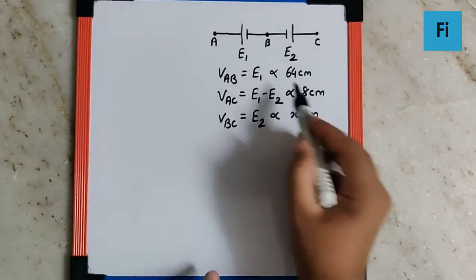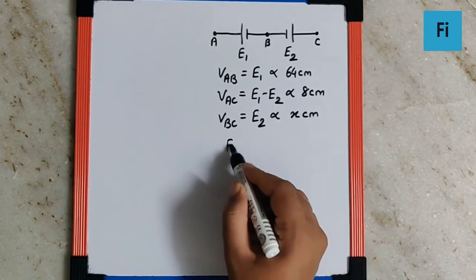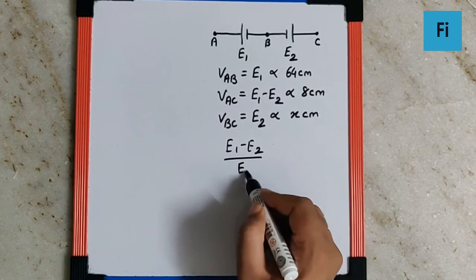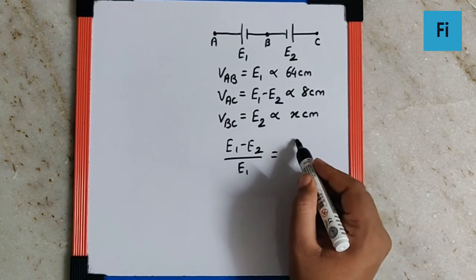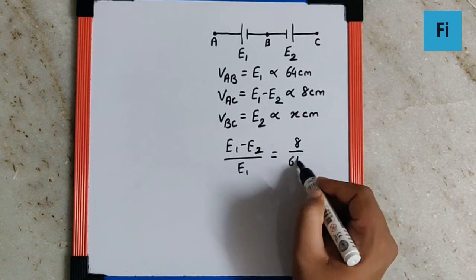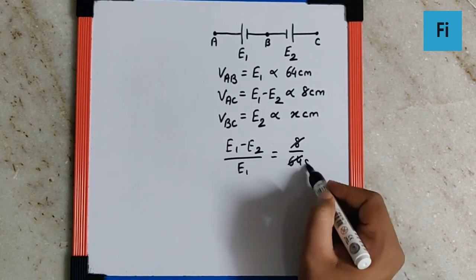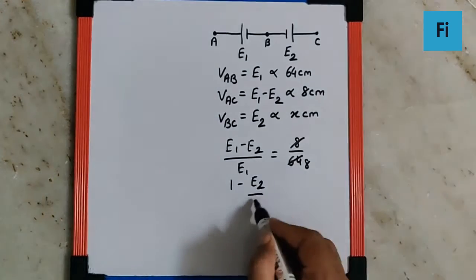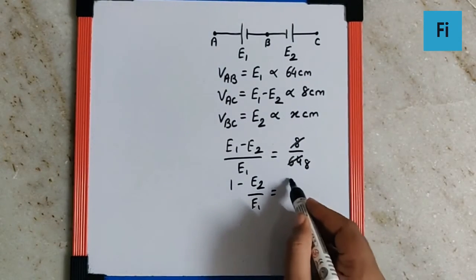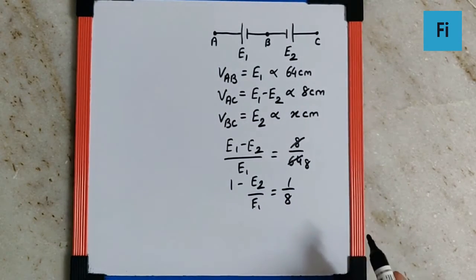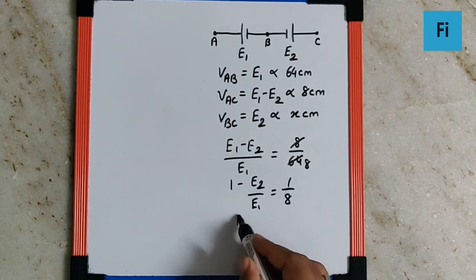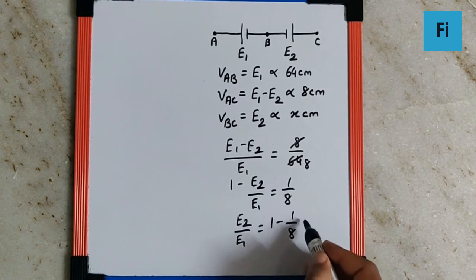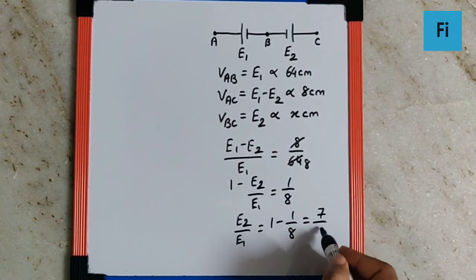So now if we take the ratio of the first two, we can say (E1 - E2)/E1 equals 8/64, which simplifies to 1/8. This can be written as 1 - E2/E1 equals 1/8. So E2/E1 can be written as 1 minus 1/8, which is actually 7/8.